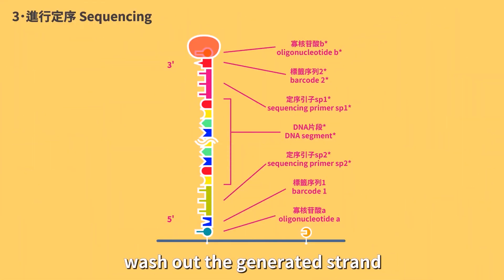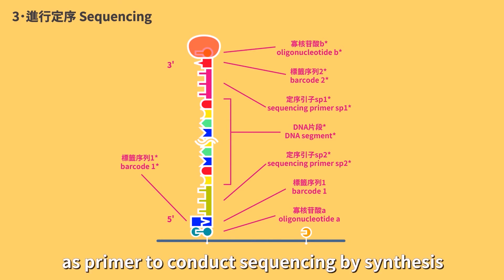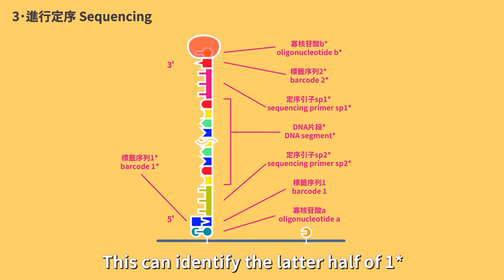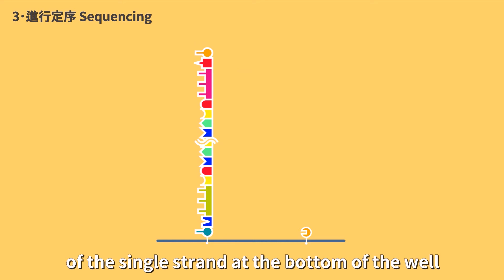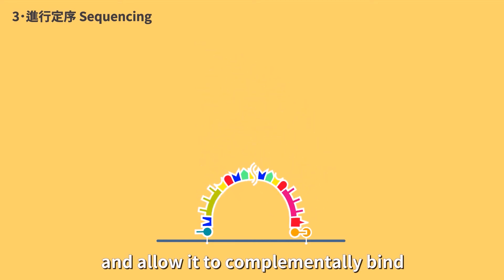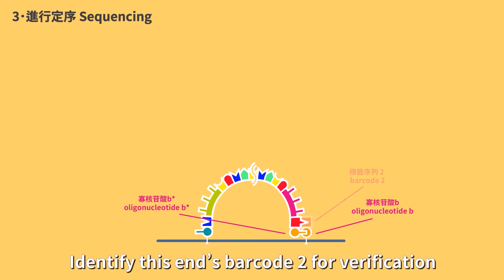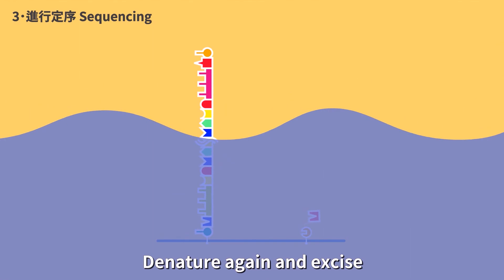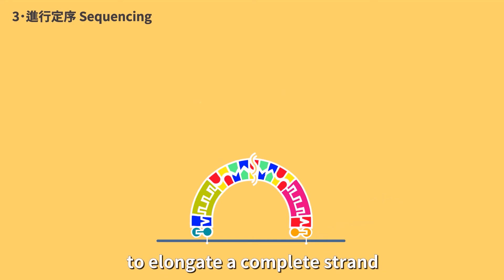Then, denature the double strand, wash out the generated strand, and add the first half of the complementary sequence 1 star of barcode 1 at the other end as primer to conduct sequencing by synthesis. This can identify the latter half of 1 star to confirm whether it is the same strand. Denature the double strand, wash out the generated strand, remove projection of the 3 prime end at the bottom of the well, and allow it to complementally bind to nearby fixated oligonucleotide B. Use oligonucleotide B as primer to proceed with small segment elongation. Identify this end's barcode 2 for verification. Denature again and excise this small generated segment.